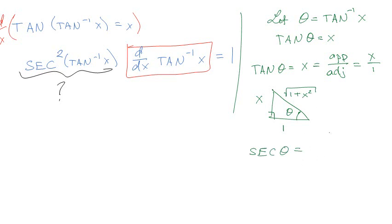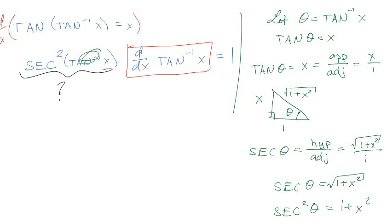So I'll just draw my fake triangle here. So opposite of x, adjacent is 1, and that means that this side is square root of 1 plus x squared, which is great, because if I'm trying to find the secant of theta, secant is 1 over cosine. So instead of being adjacent over hypotenuse, it's hypotenuse over adjacent. So the hypotenuse is the square root of 1 plus x squared, and the adjacent is still 1. So secant theta is equal to square root of 1 plus x squared, and secant squared is this thing.